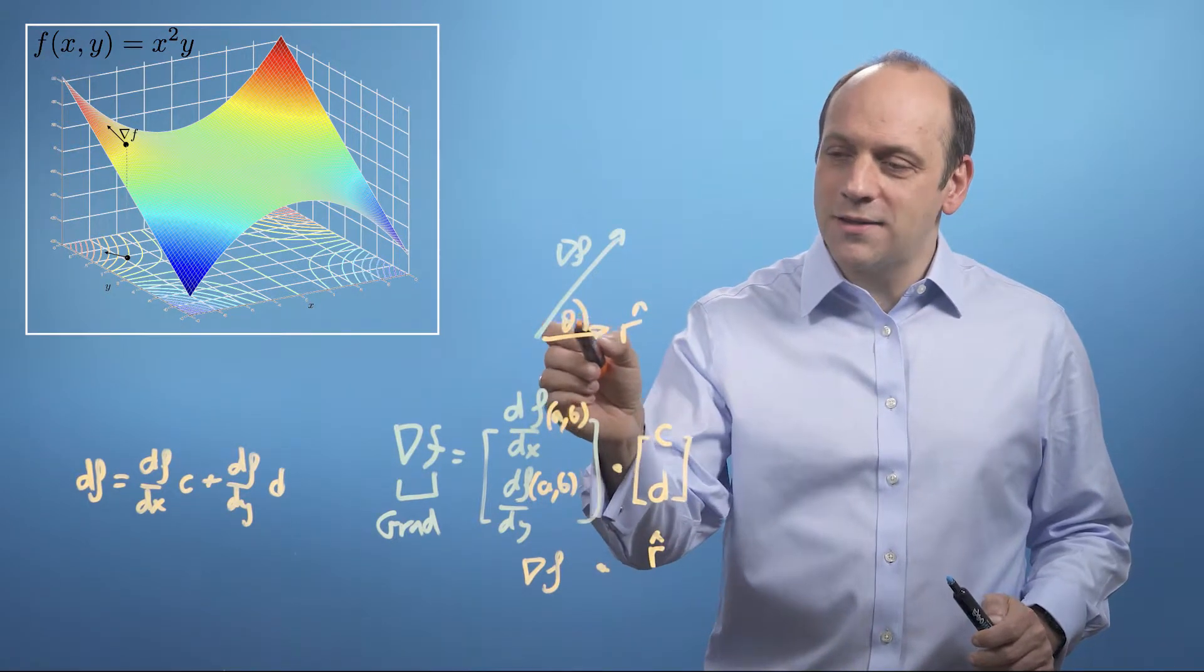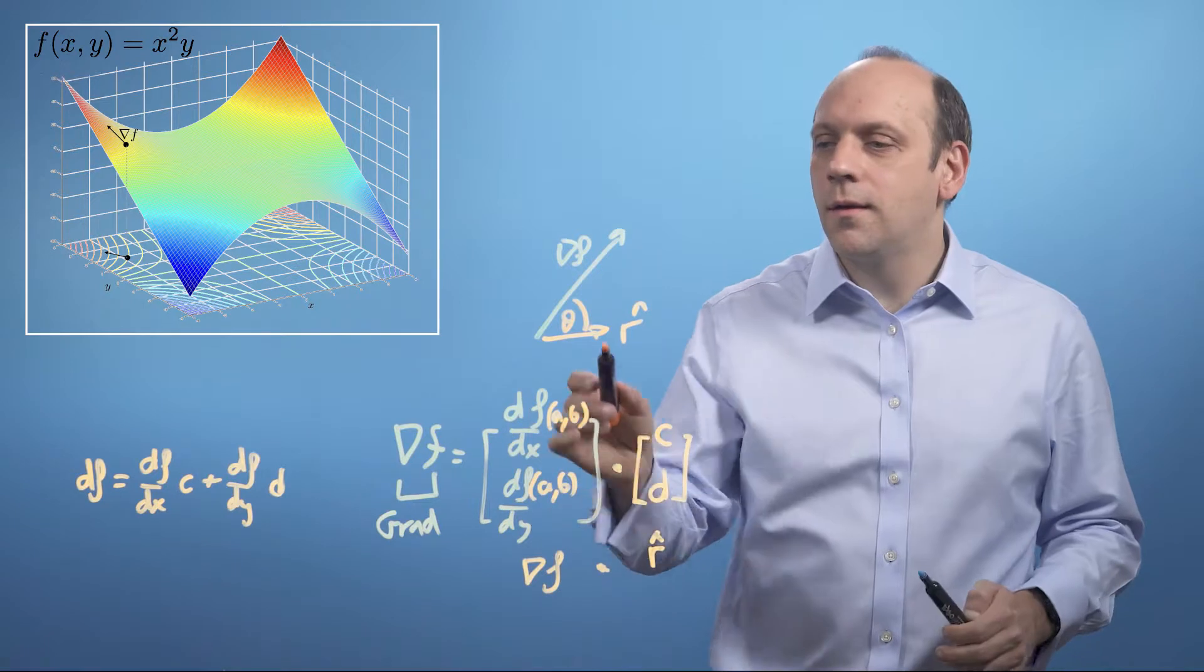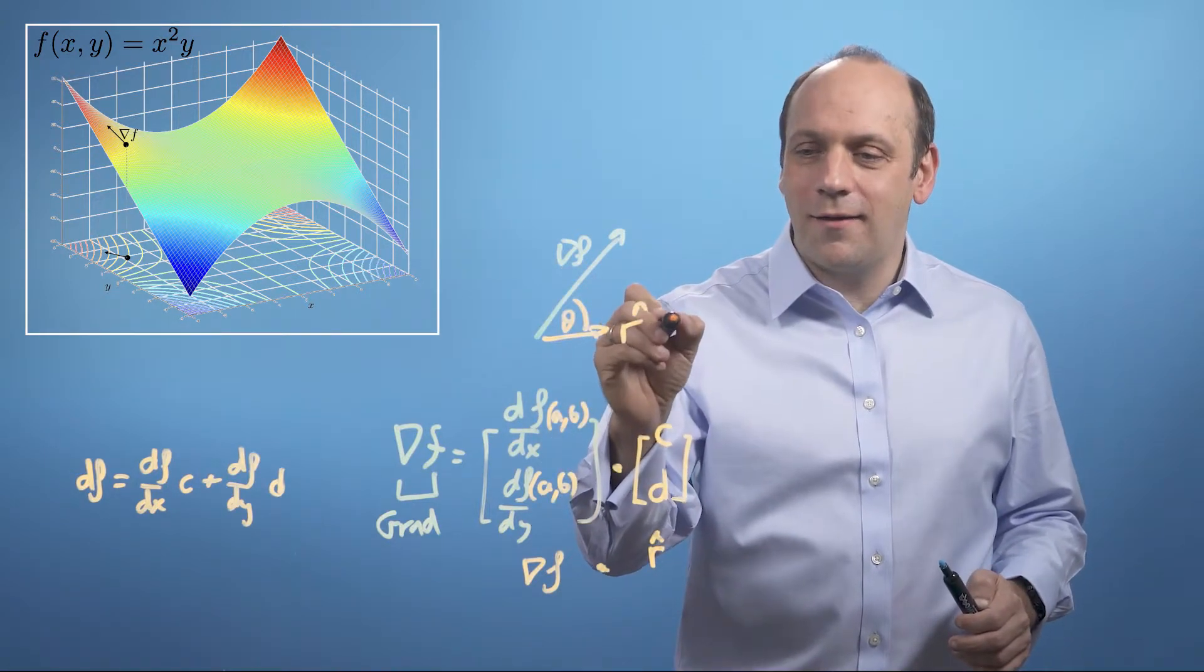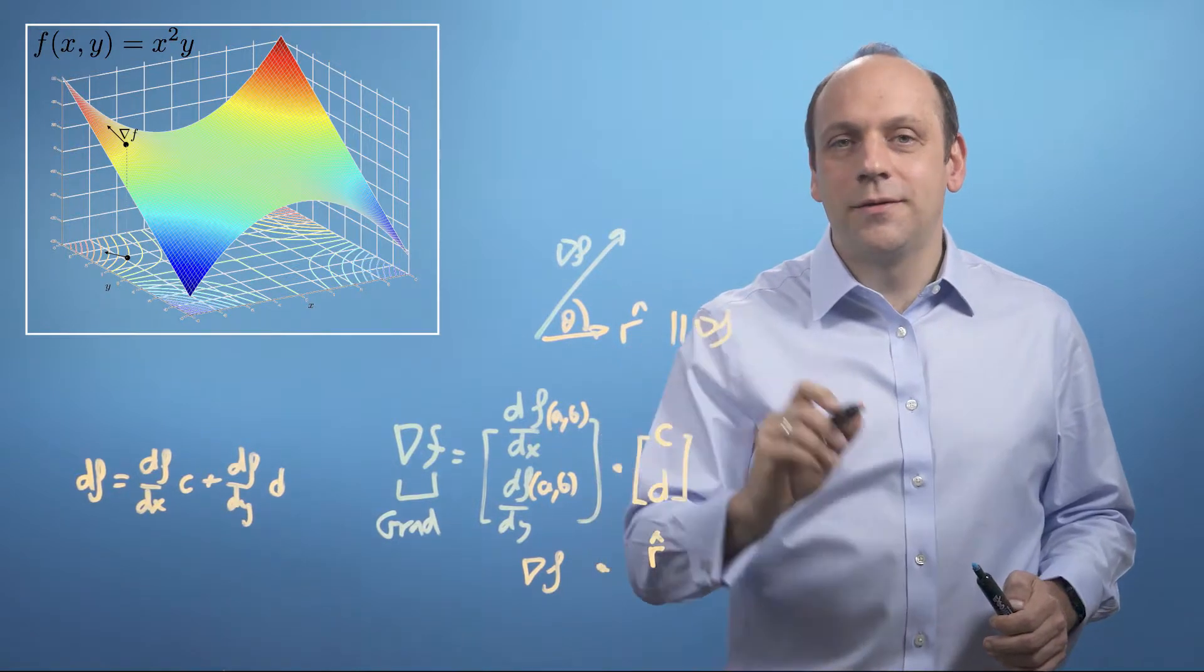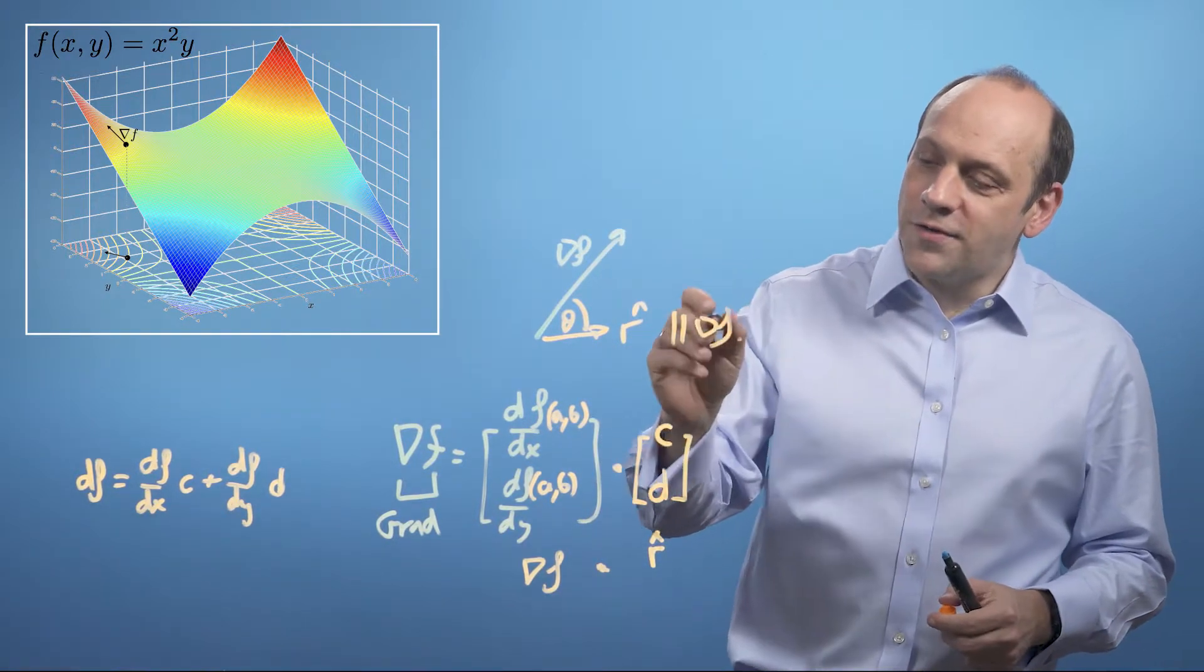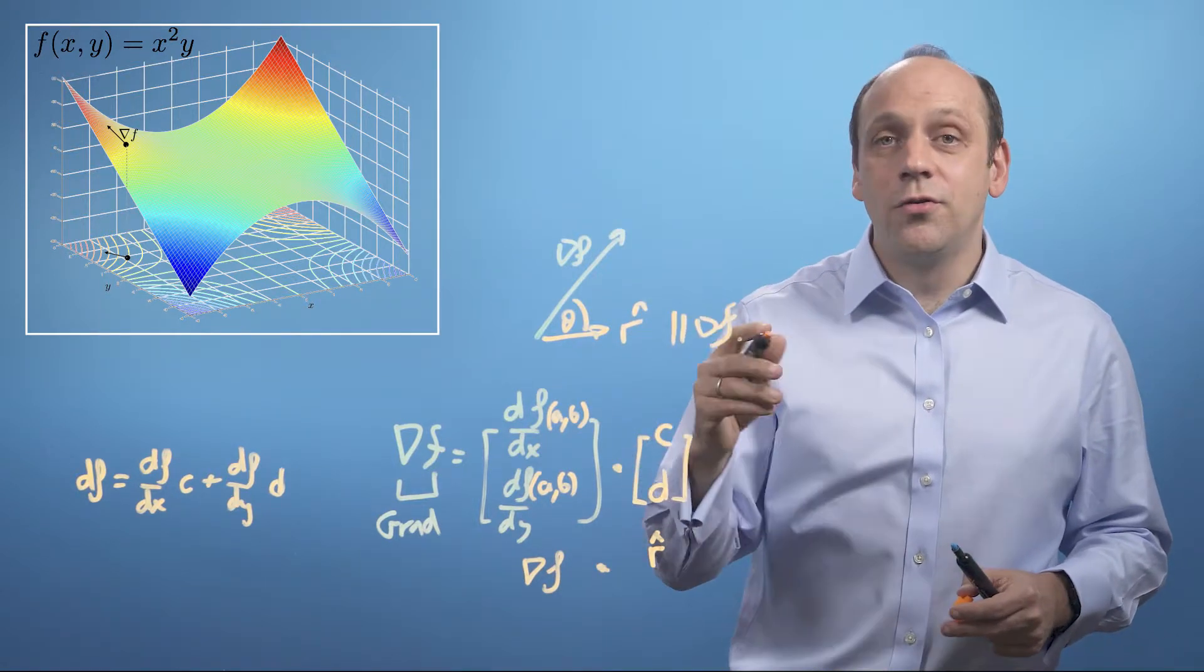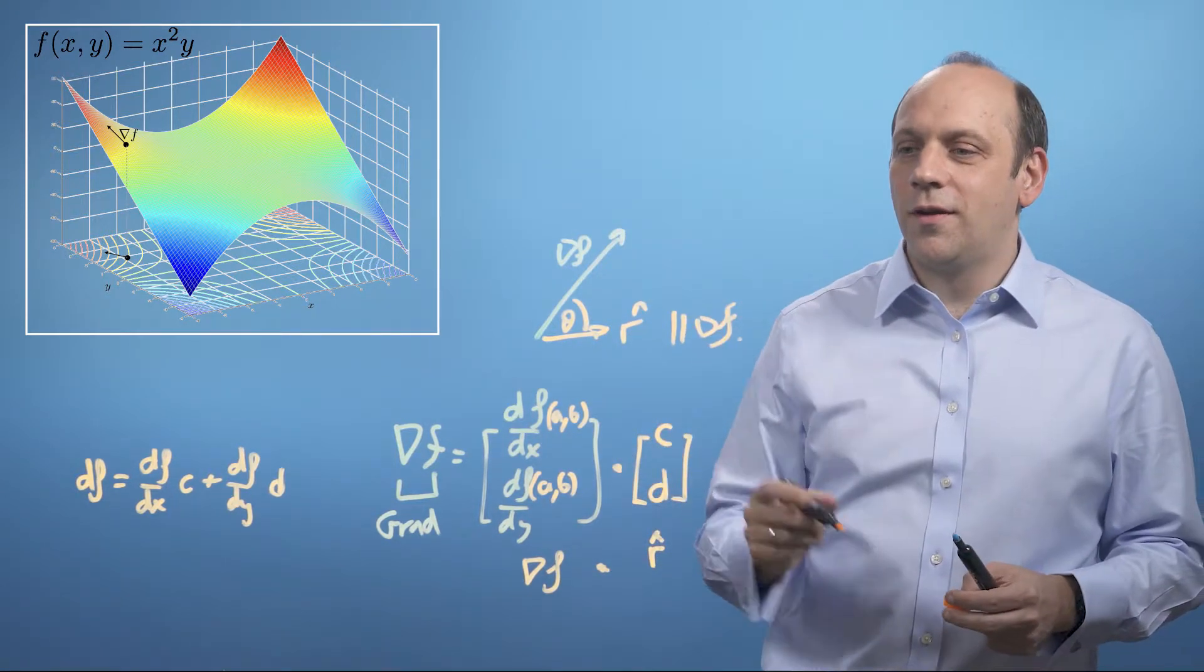which means theta is 0, which means r hat is parallel to grad f. So in order to find the maximum value of the directional gradient, we want an r hat that's actually the normalized version of grad.